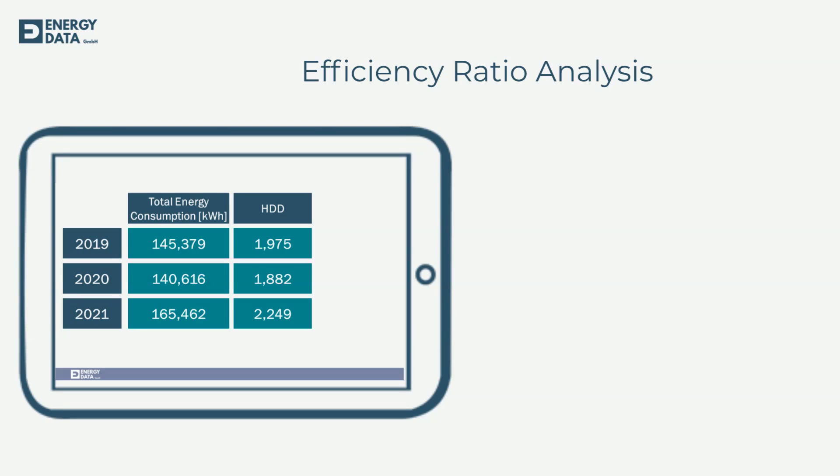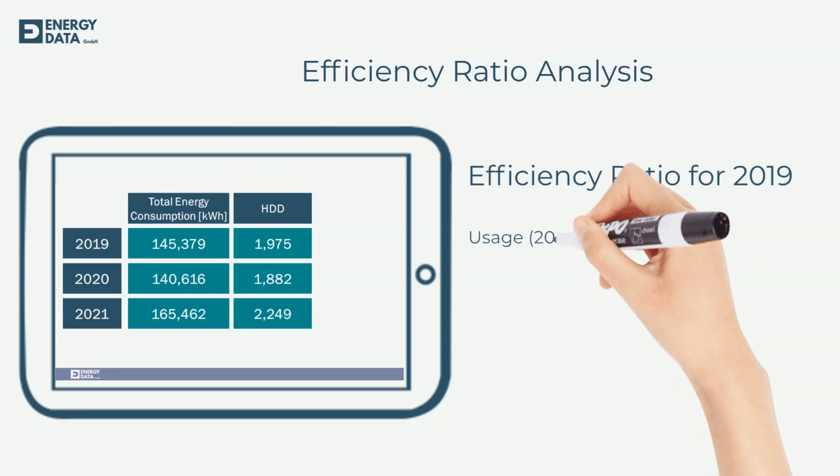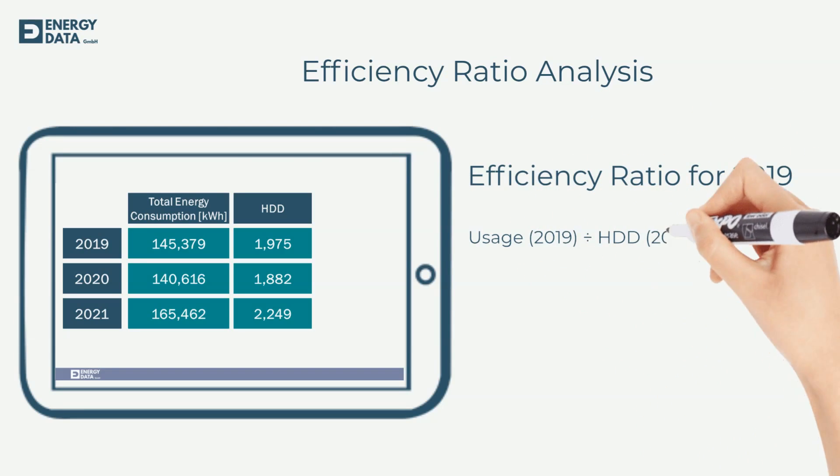To calculate heating degree days you need to know the base temperature for heating of your building. Combined with your location you can easily get the accurate degree days with our degree day calculator for free. To get the efficiency ratio for each period you just divide your usage by the sum of degree days in that specific period.